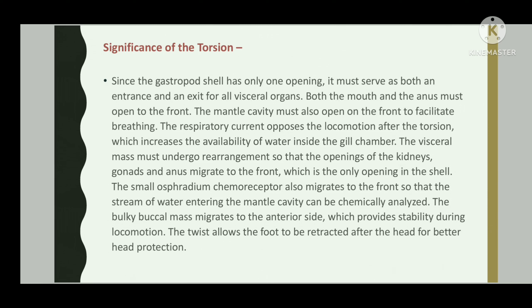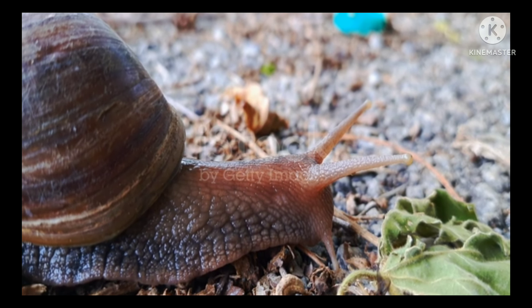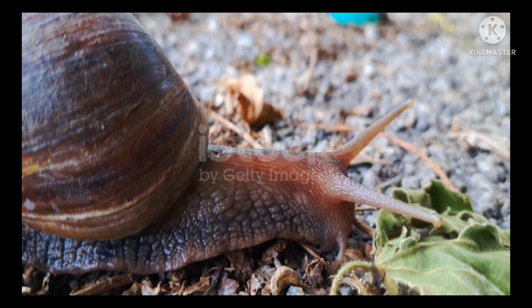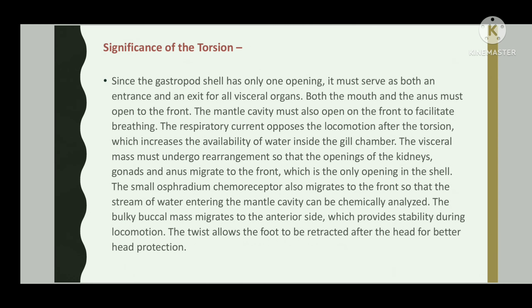The visceral mass must undergo rearrangement so that the openings of the kidney, gonads, and anus migrate to the front, which is the only opening to the shell. The small osphradium chemoreceptor also migrates to the front so that the stream of water entering the mantle cavity can be chemically analyzed. The bulky buccal mass migrates to the anterior side, which provides stability during locomotion, and the twist allows the foot to be retracted after the head for better head protection.